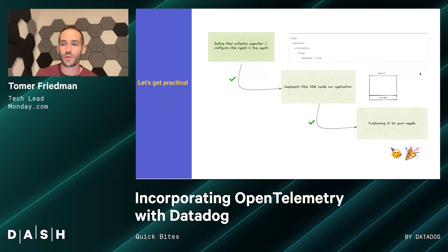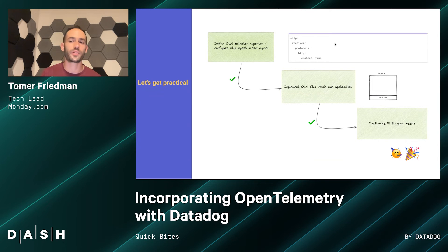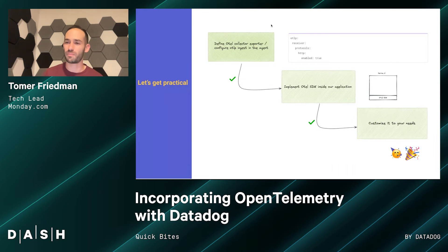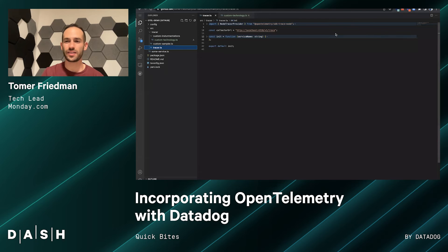So let's get practical. The first thing we need to do to start sending telemetries is either set up the collector or configure the agent to work with OTLP ingest. Here's a little snippet on how to configure the OTLP ingest in the agent — essentially telling the agent that you want to work with OpenTelemetry. Then we implement the OTel SDK inside the application and send it directly to the exporter, customized to any of your needs. Let's look at some code to understand even further how to do that.